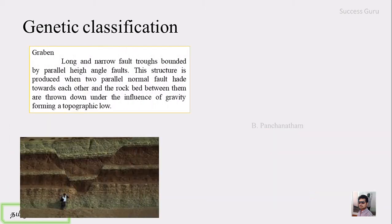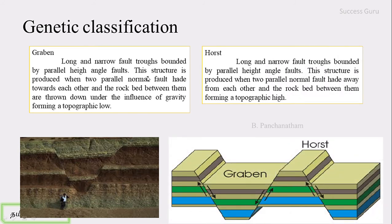The graben is a long and narrow fault trough bounded by parallel high-angle faults. This structure is produced when two parallel normal faults dip towards each other and the rock bed between them is thrown down under gravity, forming a topographic low. Conversely, the horst is formed when parallel normal faults dip away from each other, forming a topographic high.